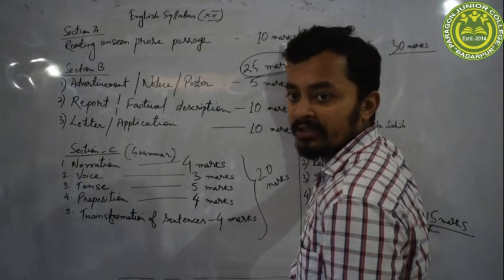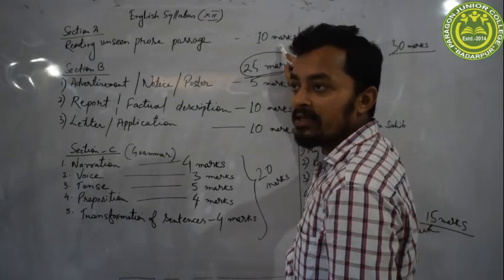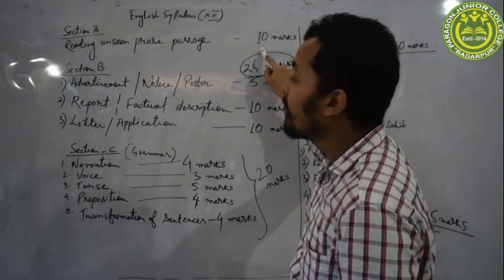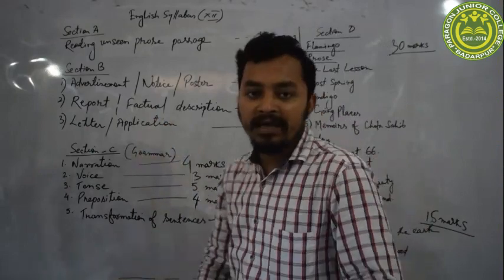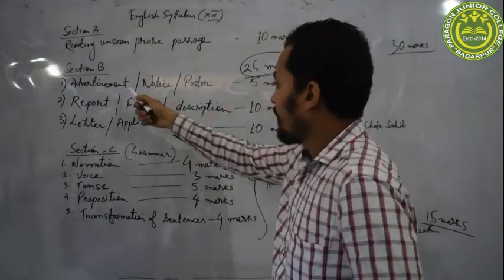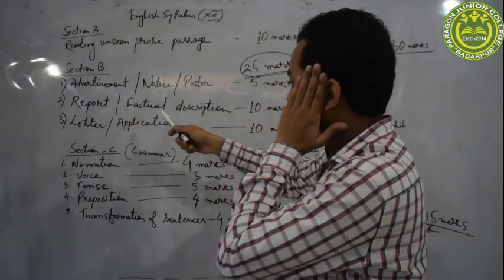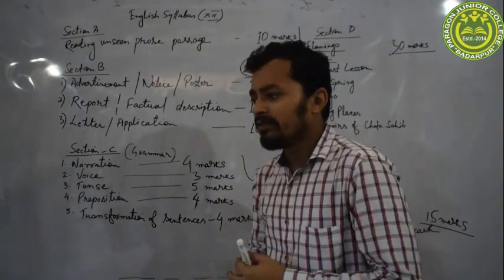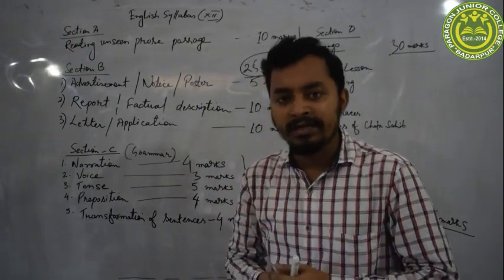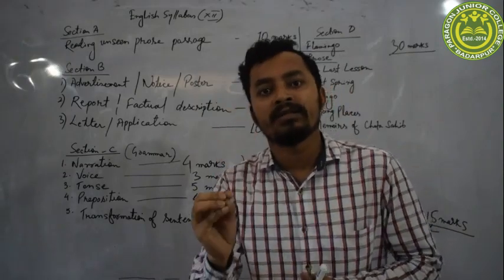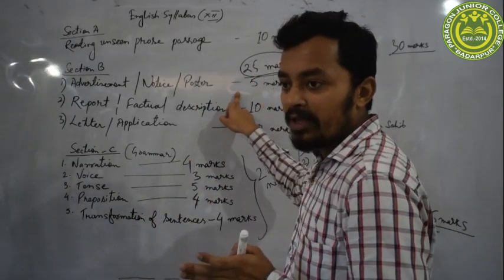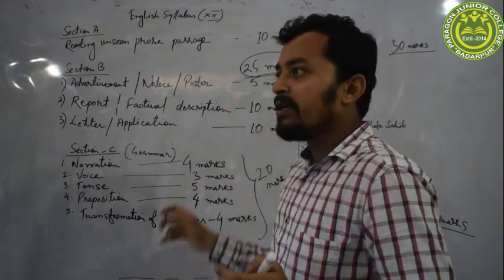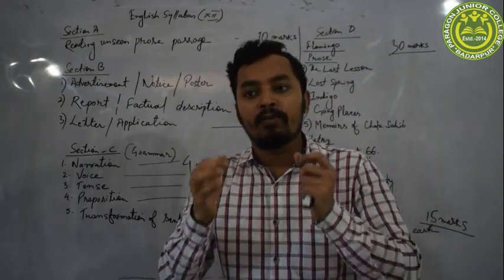The first section is Section A, which consists of 10 marks. There will be 1-mark and 2-mark questions. If you write nicely, the examiner will not deduct marks and will give you full marks — you can score 10 upon 10 from Section A. Section B is a little bit tough. Sometimes marks are deducted — the major part of the marks are deducted from Section B.